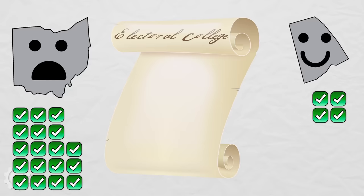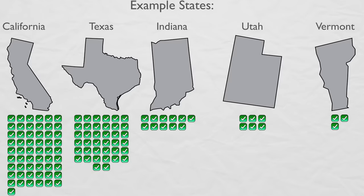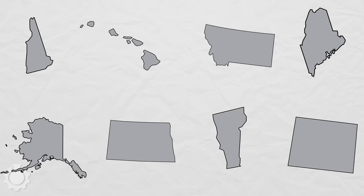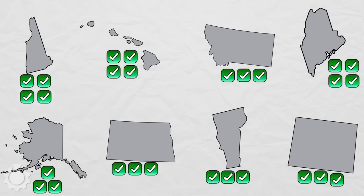Why? Because, according to the rules of the Electoral College, every state, no matter how few people live there, gets three votes to start with before the rest are distributed according to population. Because of this rule, there are a lot of states with a few people that should only have one or two votes for president, but instead get three or four.